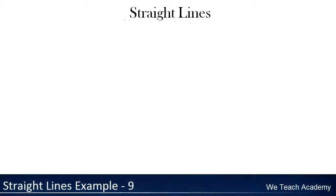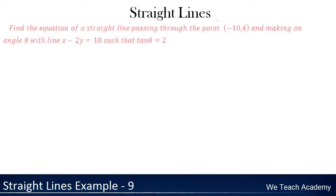Hello friends, welcome back to VDG Academy. Here we are going to discuss an example under straight lines. We need to find the equation of a straight line passing through the point (-10, 4) and making an angle theta with the straight line x minus 2y equals 10, such that tan theta equals 2.